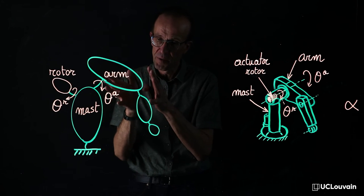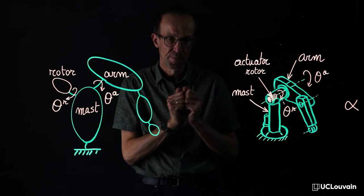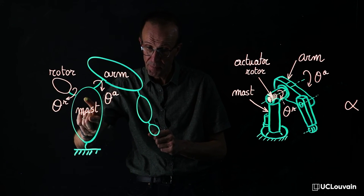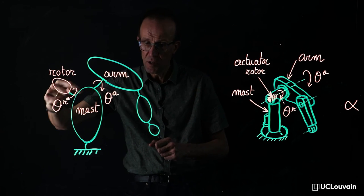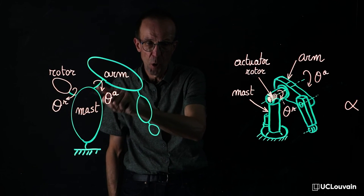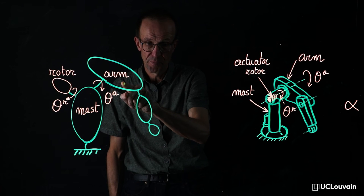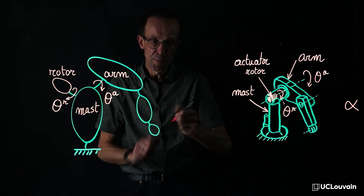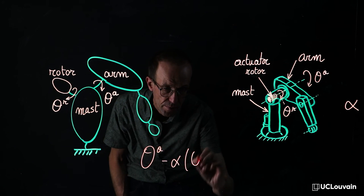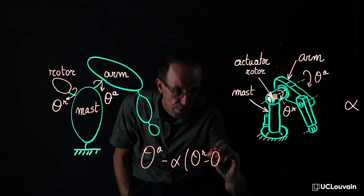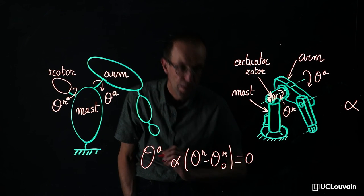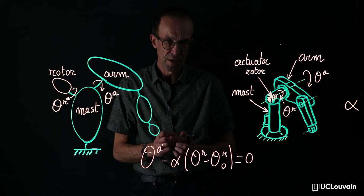In the multi-body representation of this robot, the rotor bearings are mounted on the mast, but their rotation axes do not necessarily coincide with the rotation of the arm.